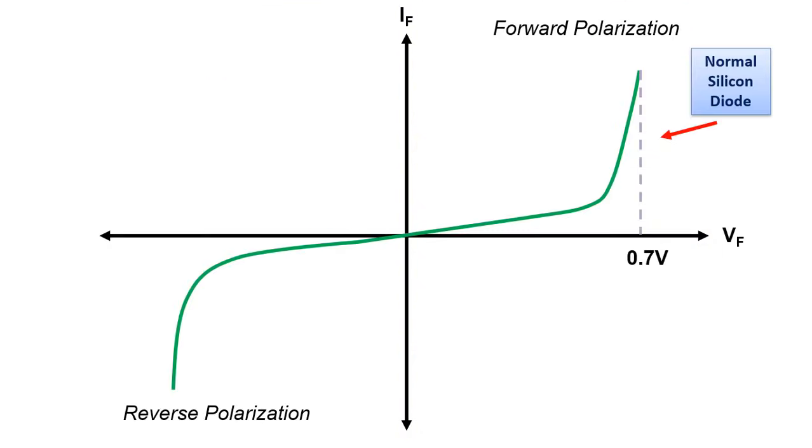We can show the transition thresholds of the diodes over the current voltage graph as follows. Current voltage graph of normal silicon diode is shown as here. After about 0.7 volts voltage, it starts to pass current and becomes forward biased. We can show the current voltage graph of the Schottky diode in this way. After about 0.3 volts voltage value, it will start to pass current and become forward polarized.